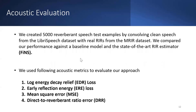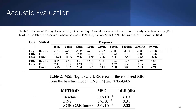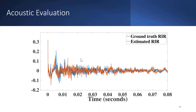We compared our performance against a baseline model and the state-of-the-art room impulse response estimator FINS, using four different acoustic metrics: log energy decay relief loss, early reflection energy loss, mean square error, and direct-to-reverberant ratio error. The results show that our proposed approach outperforms FINS. The time domain plot of the ground truth and estimated room impulse responses shows that our estimate has similar macroscopic structure to the ground truth, while the fine structure differs.